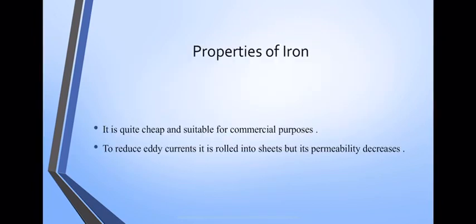It is quite cheap and suitable for commercial purpose. It is the 10th abundant element in the universe, that is why we use it in commercial applications. To reduce the eddy current, it is rolled into sheets, but its permeability decreases.